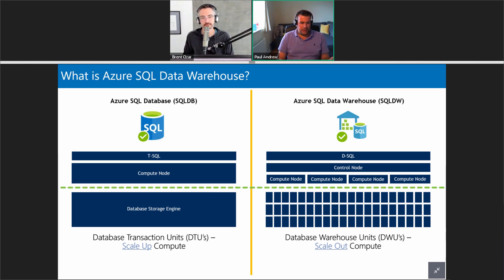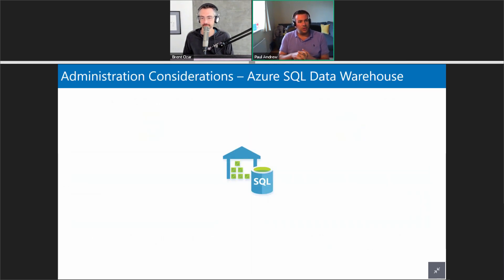A control node distributes the query and those nodes each have an allocation of storage distributions — they do the work and bring it back together. Hopefully that sets the scene for SQL DW and why we might use it for certain workloads. The storage is disconnected from the compute, so you can scale compute without affecting storage.